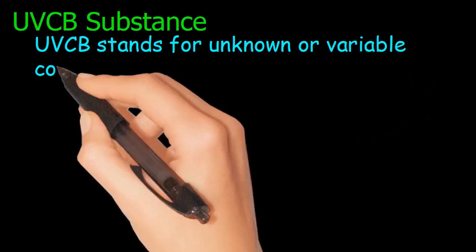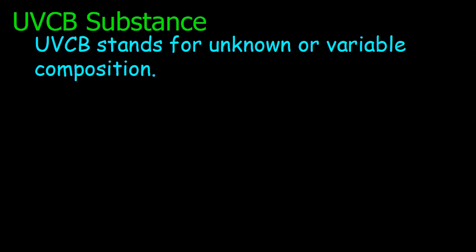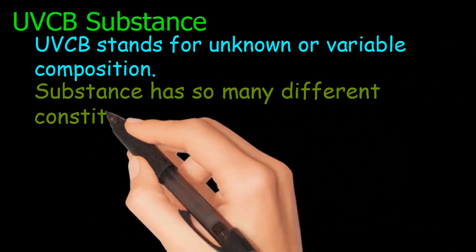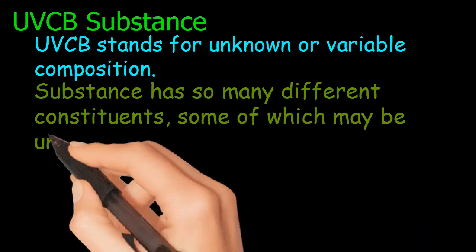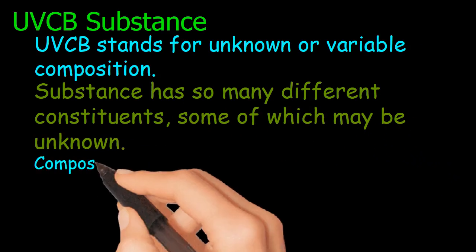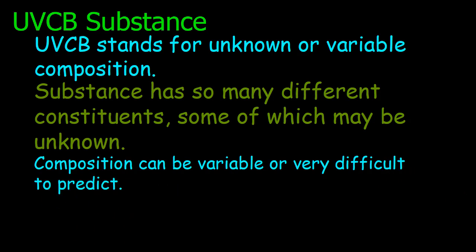UVCB substance. UVCB stands for unknown or variable composition. Substance has so many different constituents, some of which may be unknown. Composition can be variable or very difficult to predict.